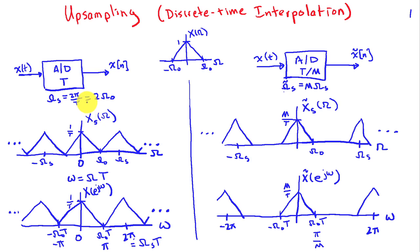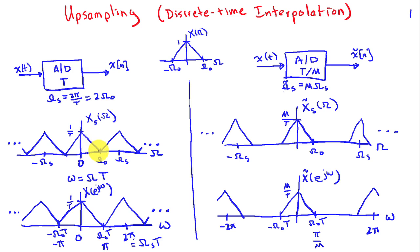We're going to start on the left, where we have the lower sampling rate. In this case, we're showing that the sampling rate is exactly twice the bandwidth of the signal. Of course, in a practical system you'd want a little bit of space to allow for filter transition bands and so on, but this is nice for purposes of illustration.